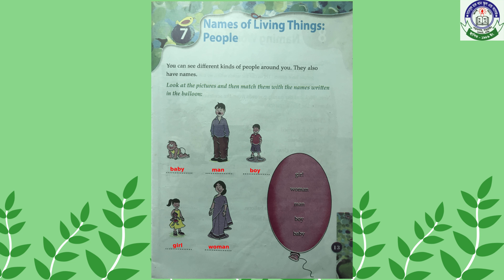Unit 7: Names of Living Things — People. You can see different kinds of people around you; they also have names. Look at the pictures and match them with the names written in the balloon. The first is a picture of a baby — write baby. The next one is man, then a picture of a boy — write boy, then a picture of a girl — write girl, and the last one is a picture of a woman — write woman.